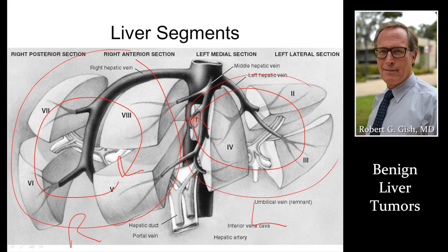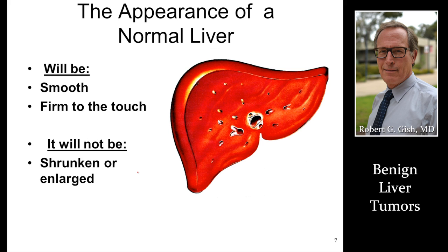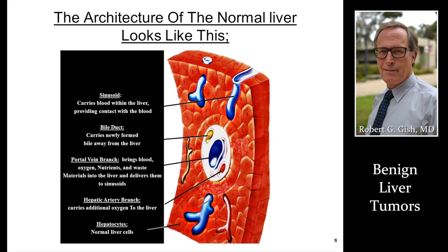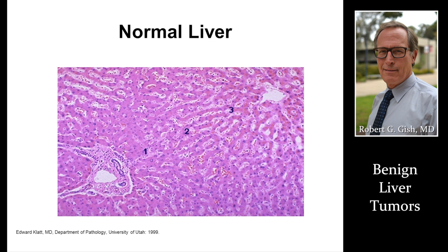In the benign liver tumor world, most of what we do is monitoring, occasional biopsy, and much more rarely, resection. A normal liver has a smooth surface, tiny vessels, no nodules, no lumps or bumps. Inside the liver we have regular liver cells. It's these liver cells that change that can cause tumors — sometimes from the blood vessels, sometimes from the bile tubes.